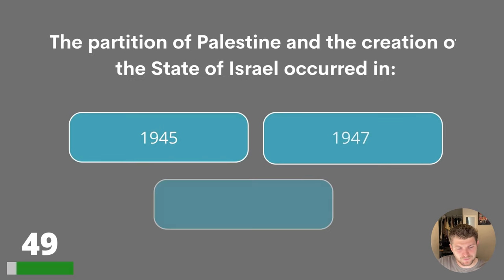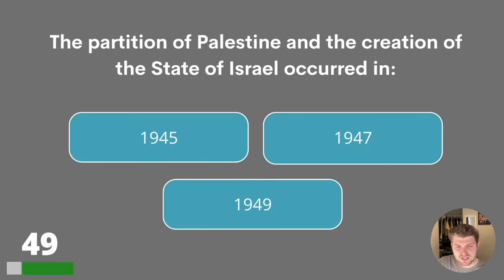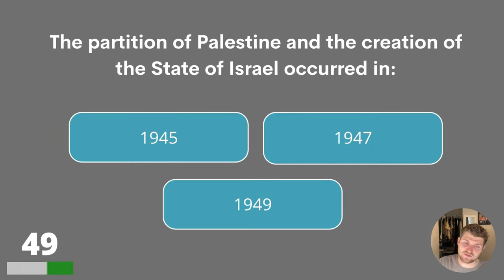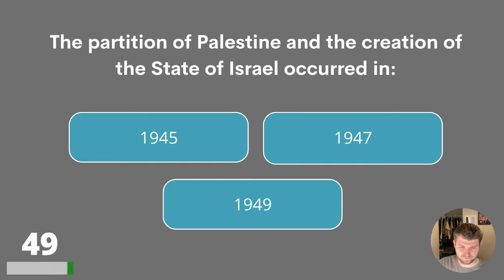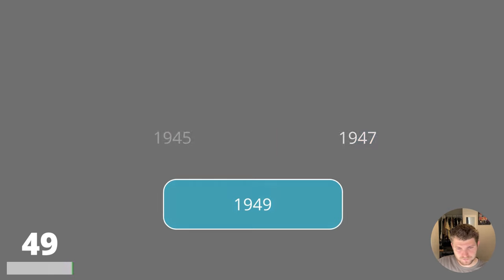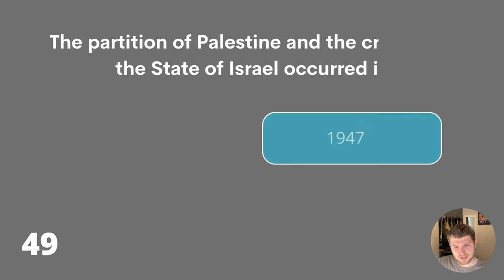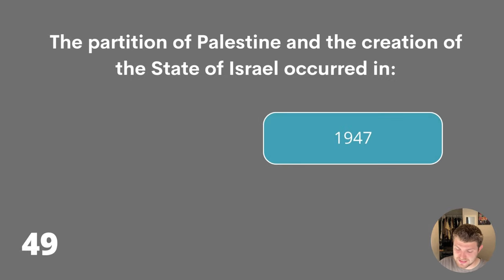Question forty-nine. The partition of Palestine and the creation of the State of Israel occurred in 1945, 1947 or 1949? The answer is 1947.